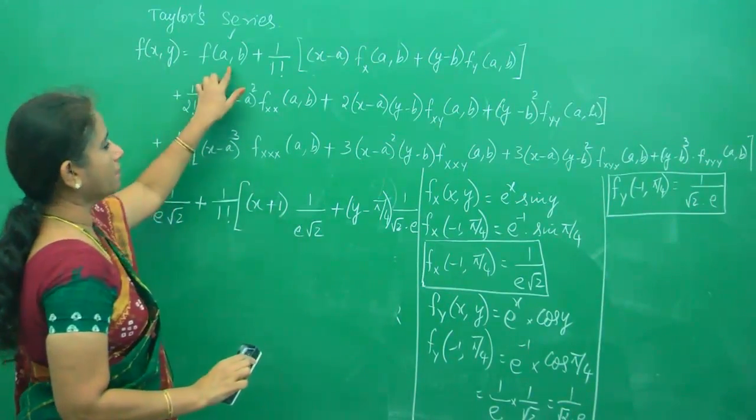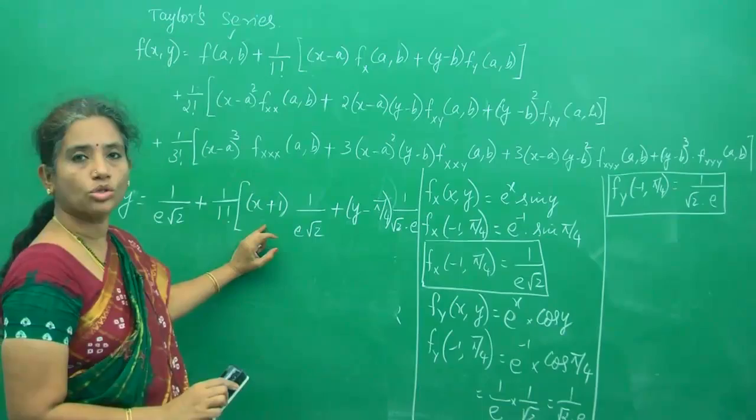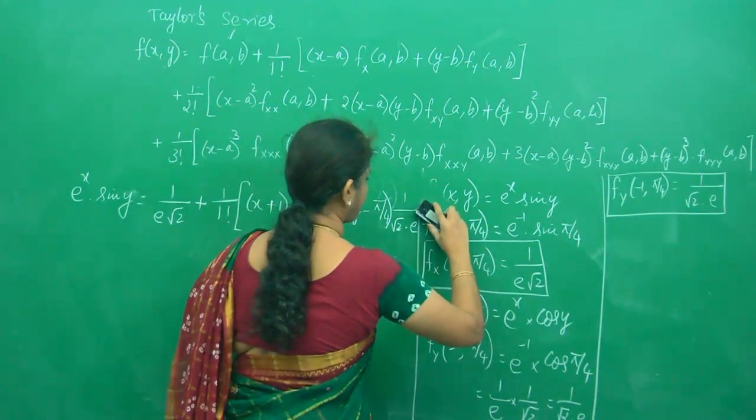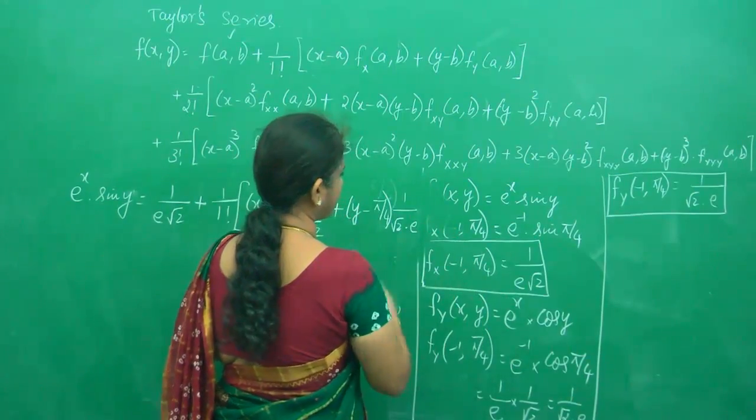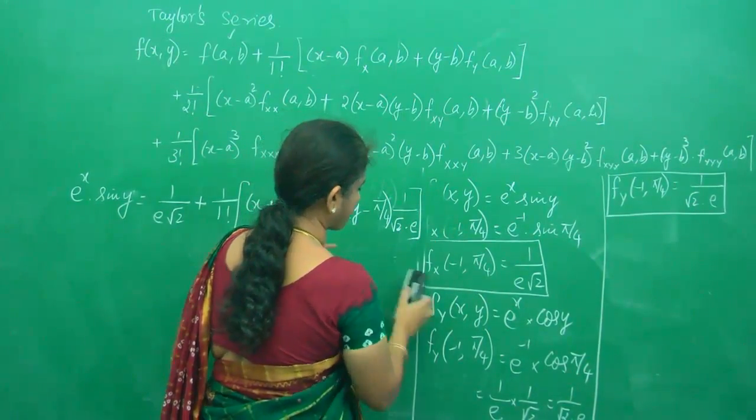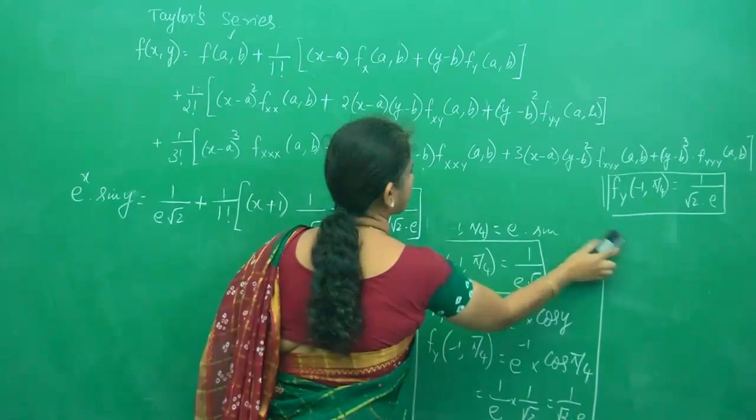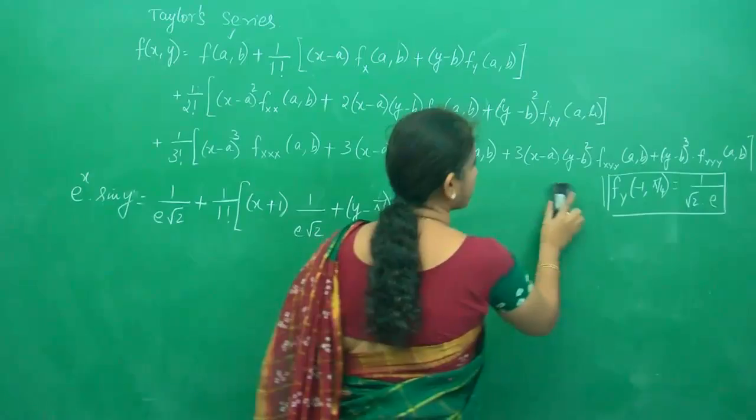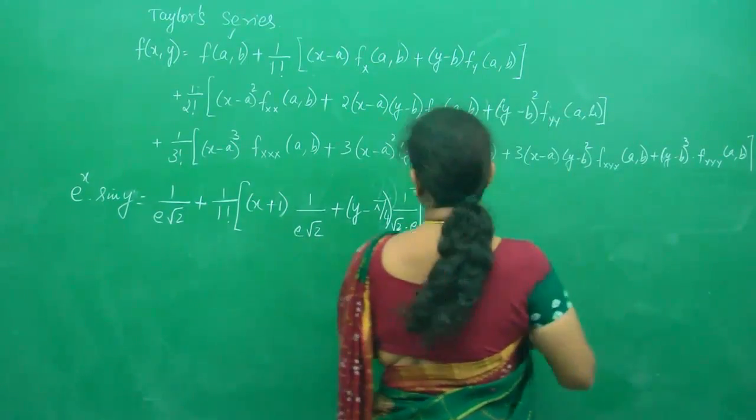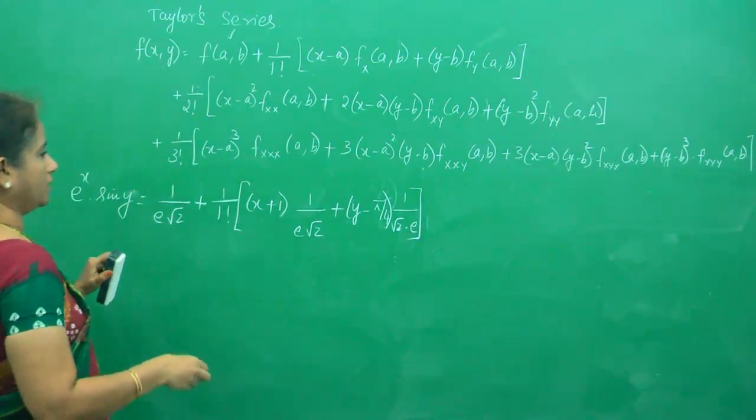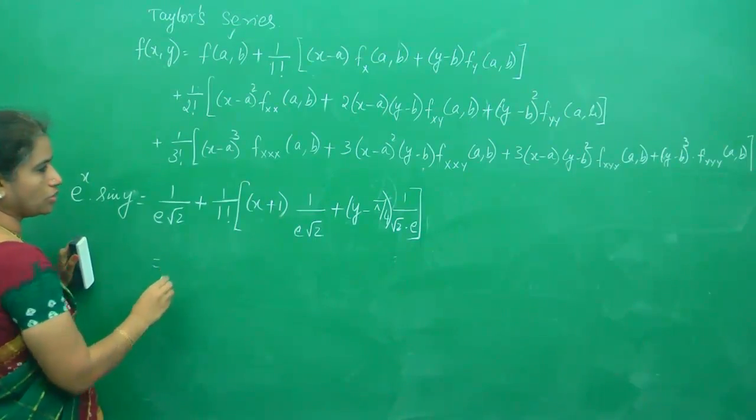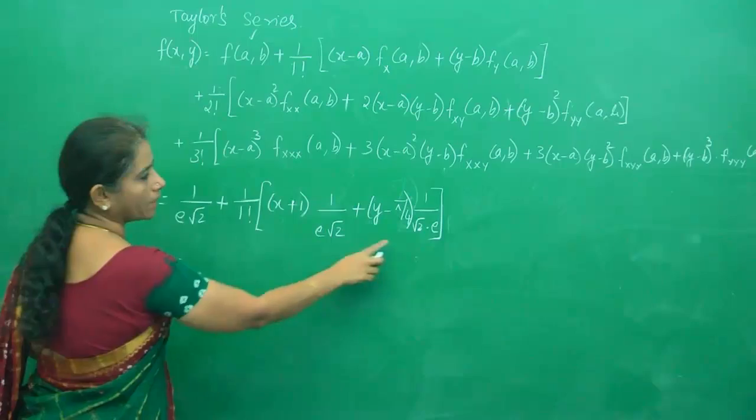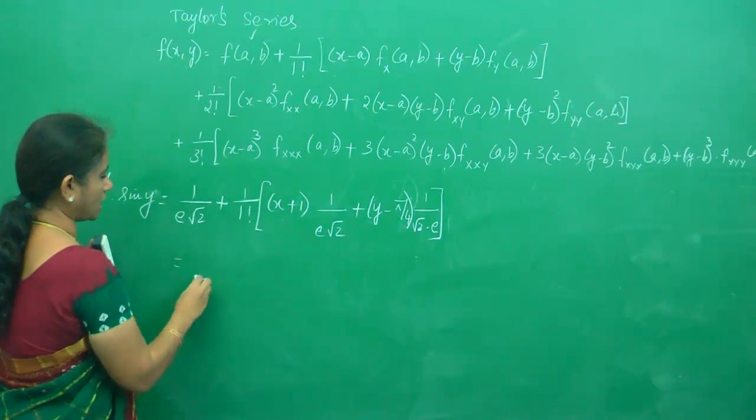And it is completed because they are asking us to do only up to the first-degree terms. It was easy for us. So after copying everything, how much simplification do you do?